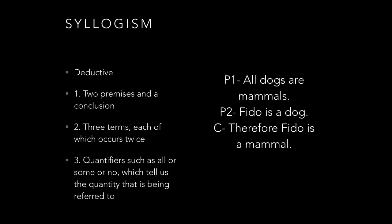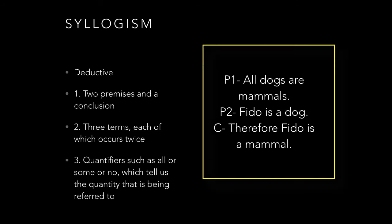What is a syllogism? Well, it's just an argument that's made up of two premises and a conclusion. There are three terms, each of which occurs twice, and there are quantifiers such as all, some, or no, which tell us the quantity of what is being referred to. You see here on the slide, there is an example of a syllogism. It's a constructive argument that is using the deductive method, going from general to specific.